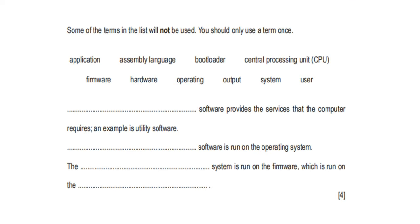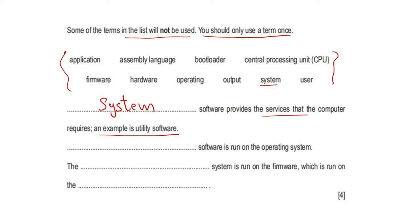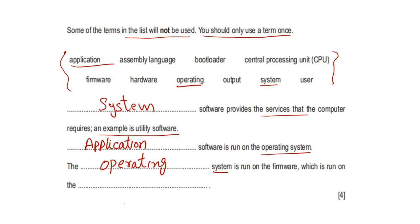Complete the paragraph about software types. System software provides the services that the computer requires; an example is utility software. Application software runs on the operating system. The operating system is run on the firmware, which is run on the hardware.